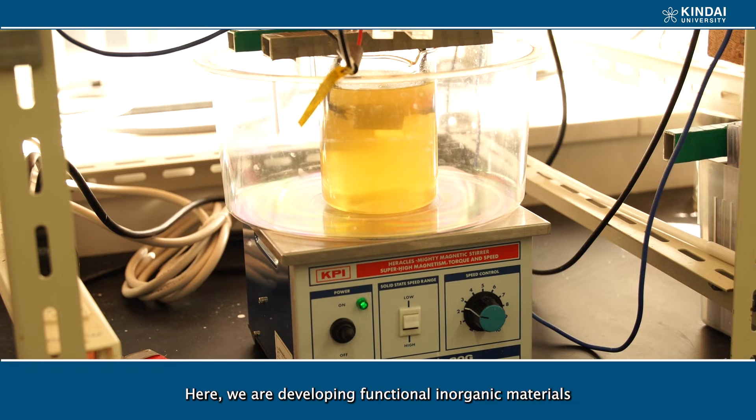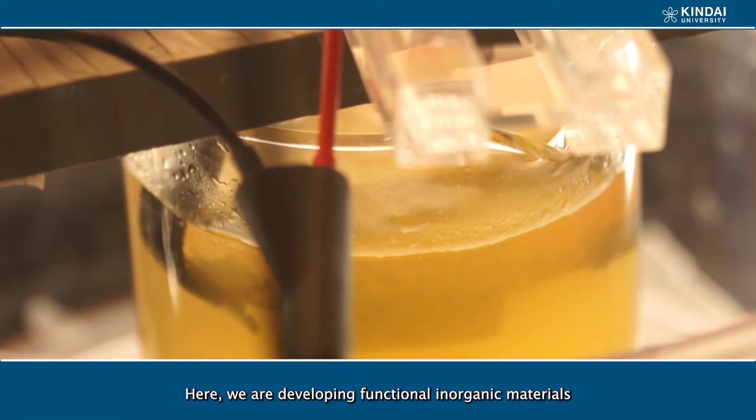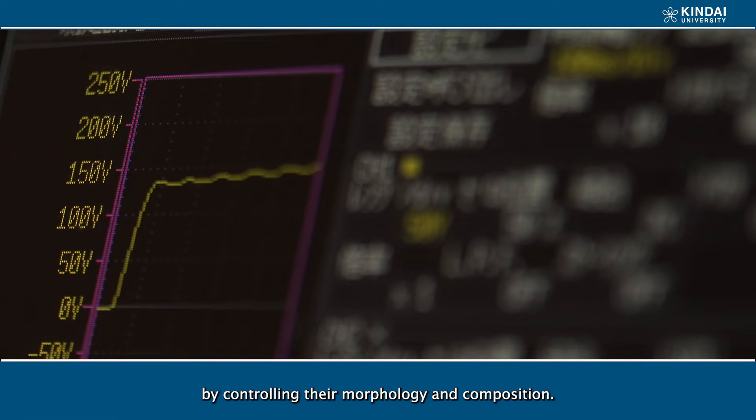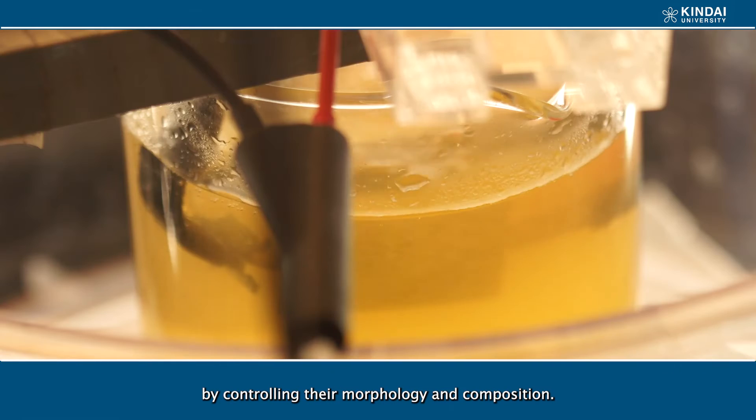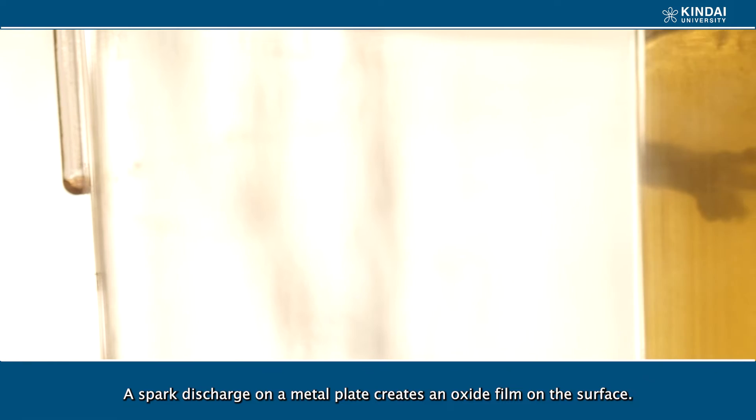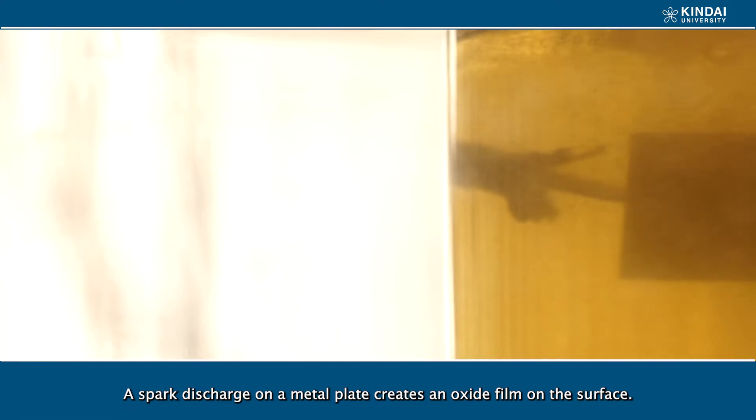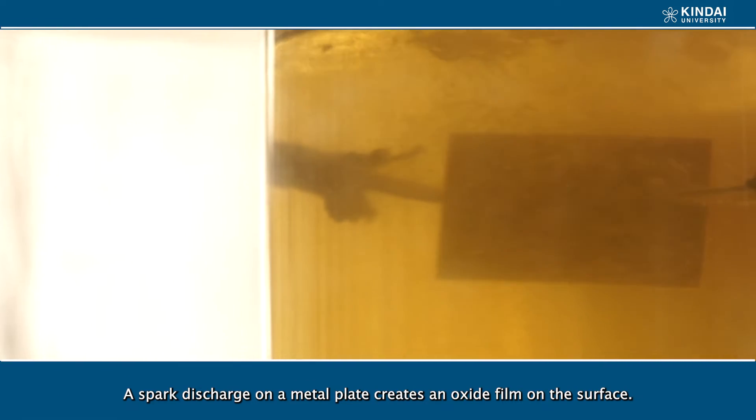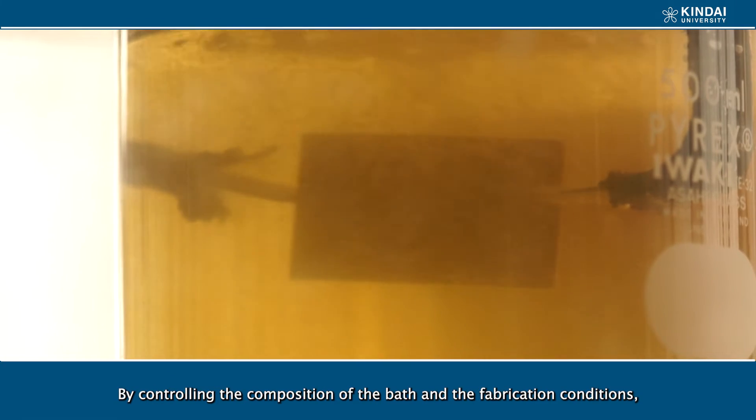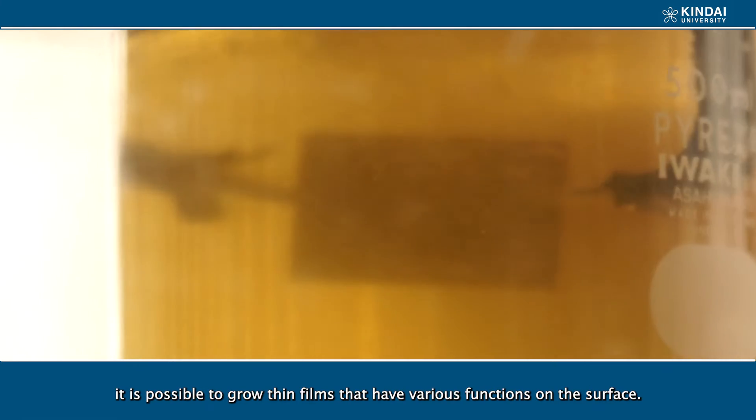Here we are developing functional inorganic materials by controlling their morphology and composition. A spark discharge on a metal plate creates an oxide film on the surface. By controlling the composition of the baths and the fabrication conditions, it is possible to grow thin films that have various functions on the surface.